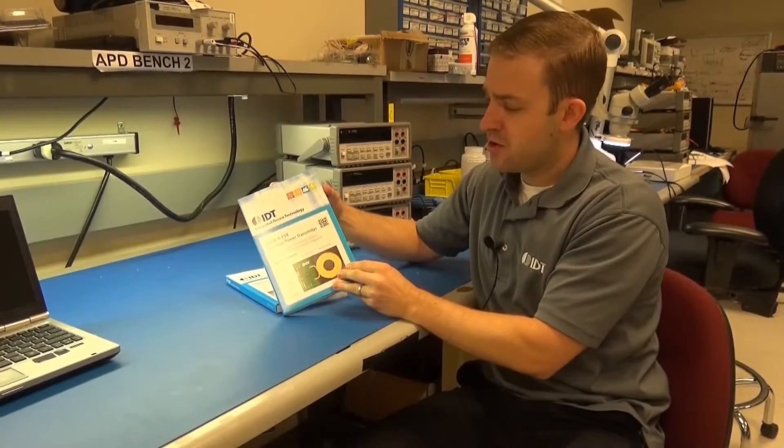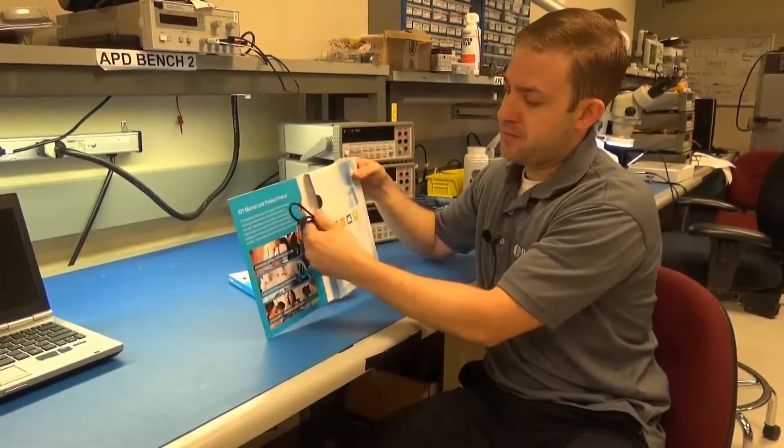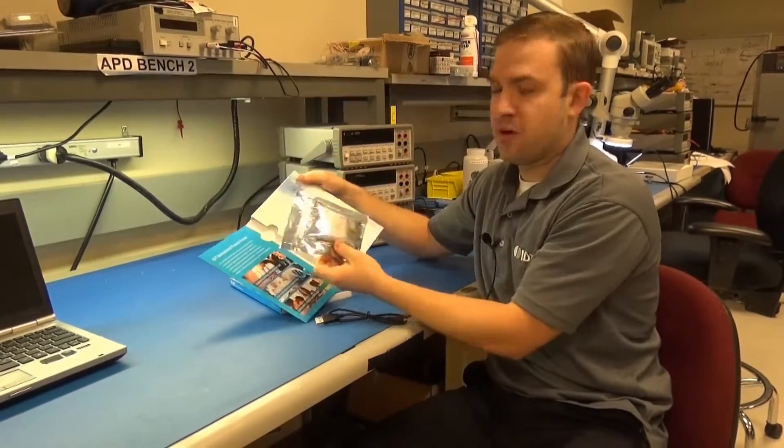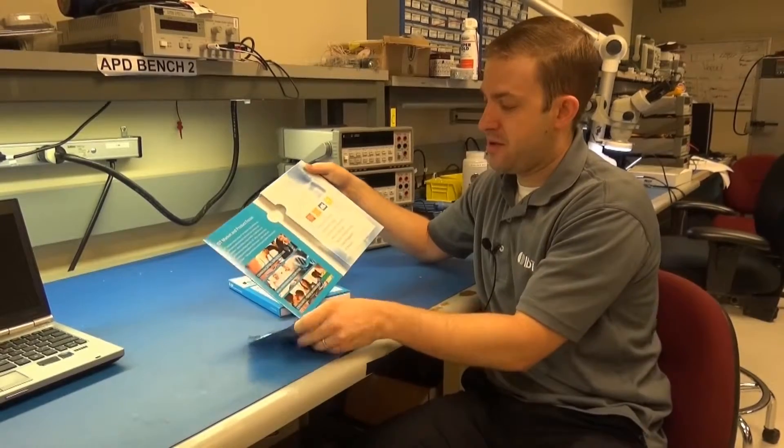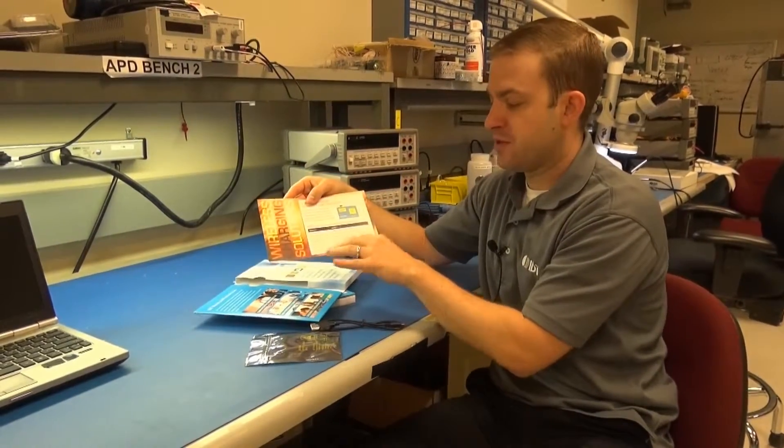Inside the box of the transmitter, you will find a USB cable, the wireless power transmitter board, and an insert with features and benefits of the board.